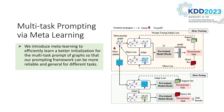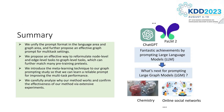In addition, we introduce the prompt meta-learning technique to our graph prompting study so that we can learn a reliable prompt for improving the multitask performance. We carefully analyze why our method works and confirm the effectiveness of our method via extensive experiments. In summary, this work can benefit future large graph models by prompting the graph directly.